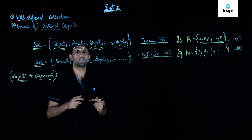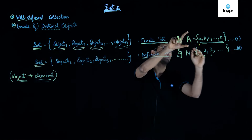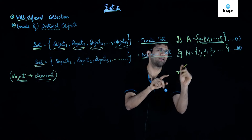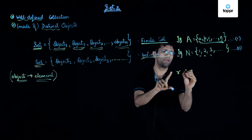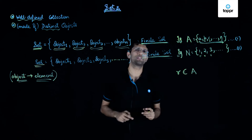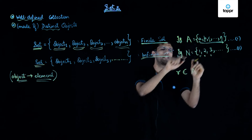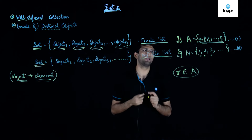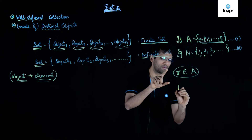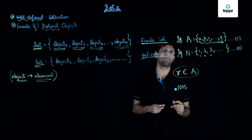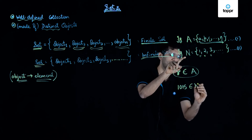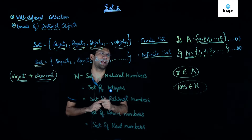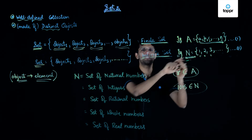An object of a set is also known as an element of a set. To understand elements in detail, consider set A, which consists of elements small a through small z. If we write a general element R of the set, R belongs to set A because it is an alphabet in the English language, so we write R is an element of set A. Similarly, the number 1015 is a natural number, so 1015 is an element of the set N of natural numbers.